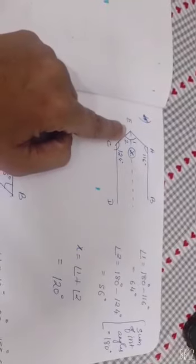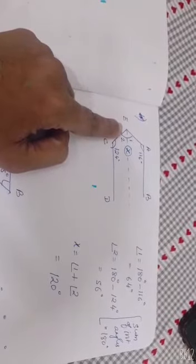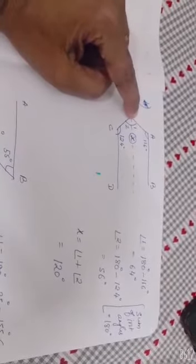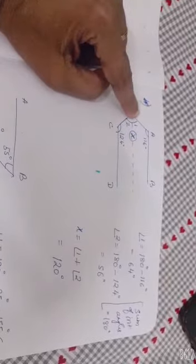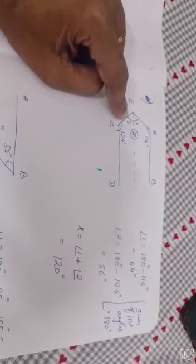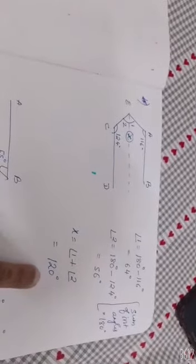Here, when this dotted line and this are parallel lines, you will make use of sum of interior angles is 180 degrees. So angle 2 will be 180 minus 124, which is 56 degrees. Similarly, 116 plus angle 1 is 180 degrees. From this you can find angle 1 as 64. X is nothing but the sum of 1 and 2, which is 120 degrees.